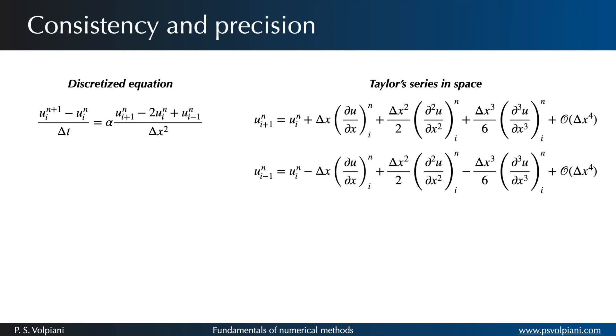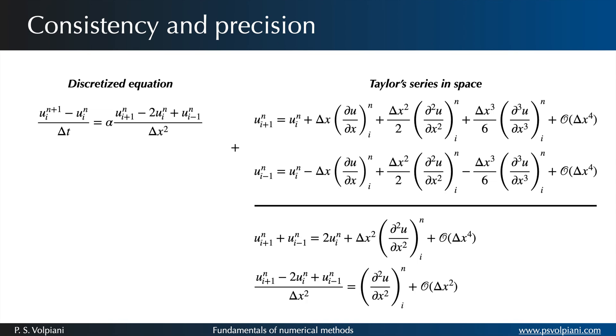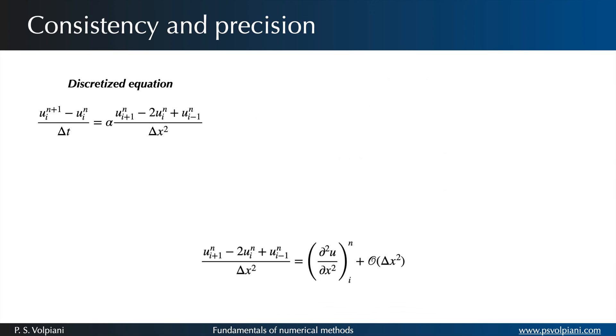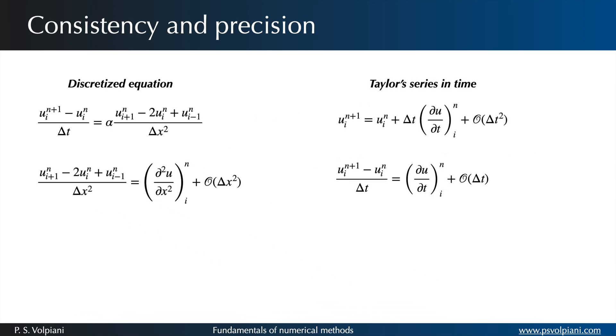To study the consistency and precision of the present scheme, we use again the Taylor's expansion in space. If we sum both equations, the odd number derivative terms will cancel each other out. In rearranging the equation, we obtain the following expression.